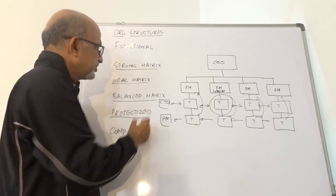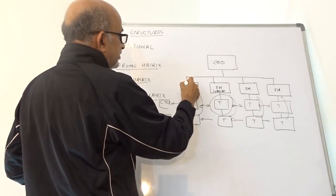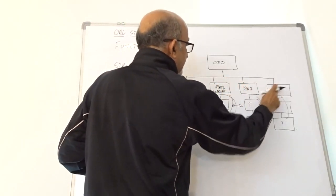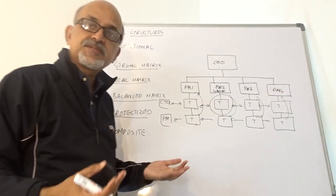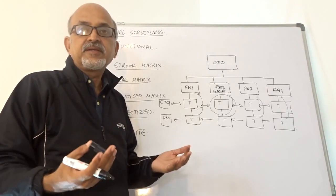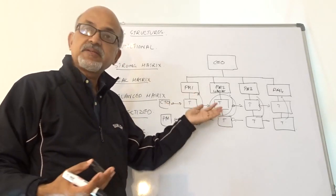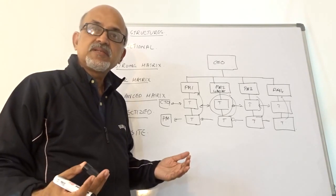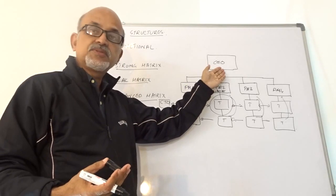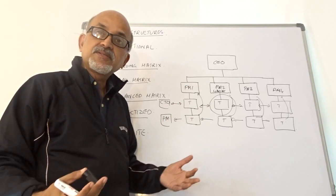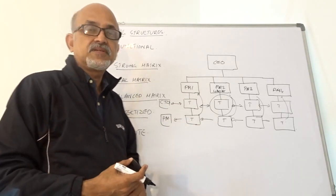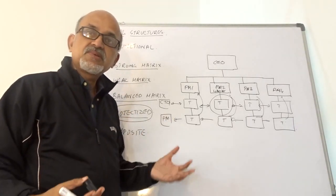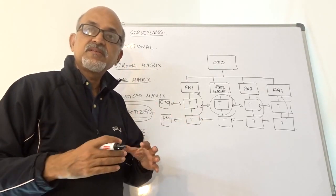Then comes the projectized organization. Whatever happens in the organization is managed as a project. If you take an IT company or a construction company — it is project-based, and it is the project managers who are calling the shots. Project managers report to the head of the organization. In a projectized organization, project teams and project managers are the breadwinners — they command the maximum authority level.